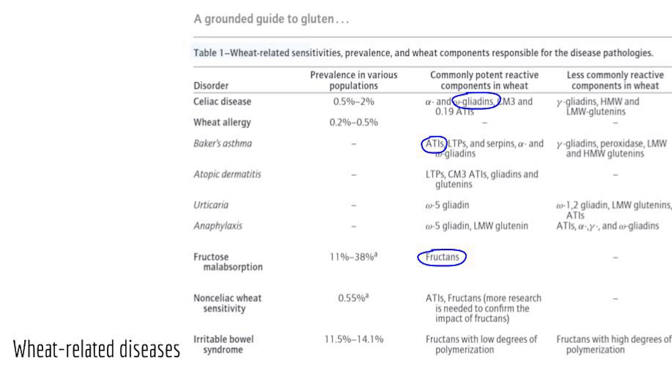So even though we typically think of celiac disease as involving bloating, diarrhea, intestinal malabsorption, or other GI problems, you can actually have many other manifestations — joint pain, rashes, and other things — because the gliadin molecule has exited the intestine.